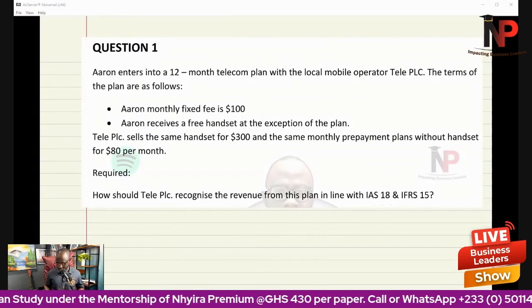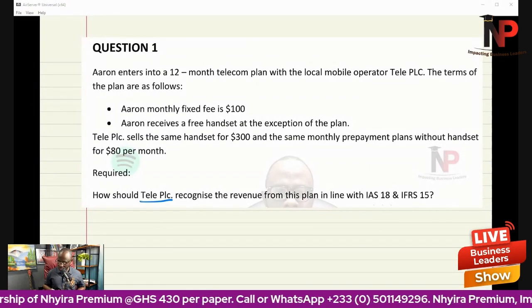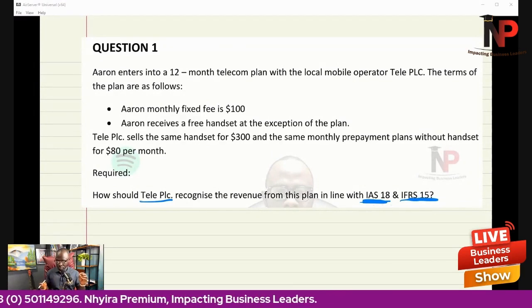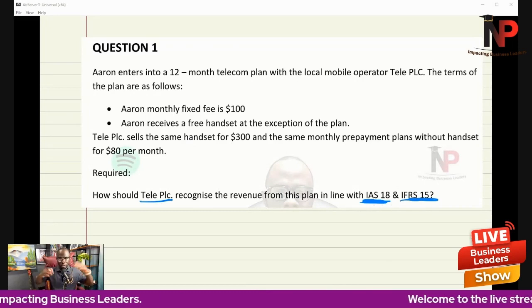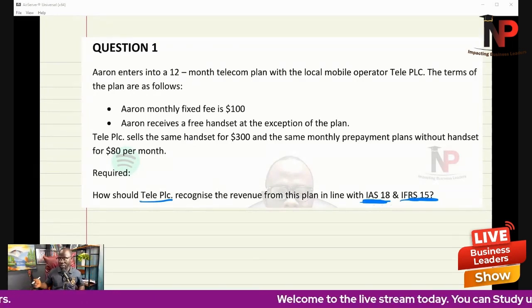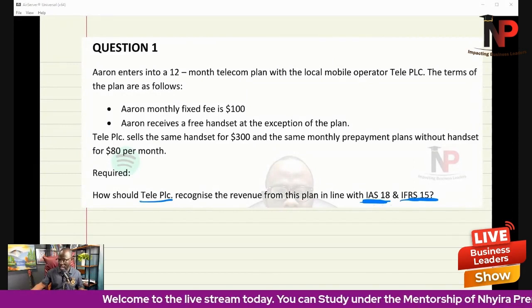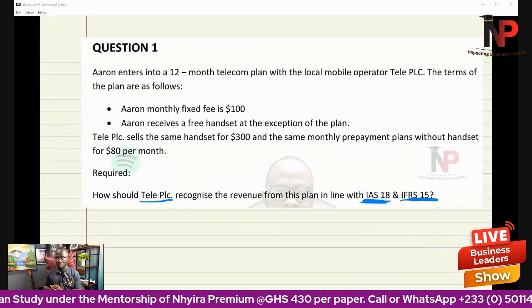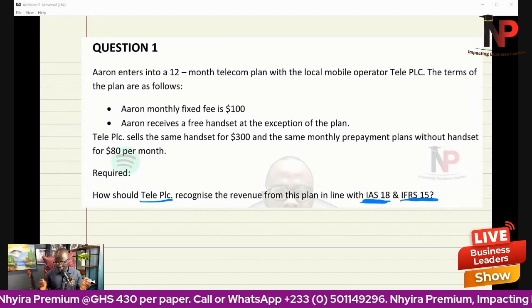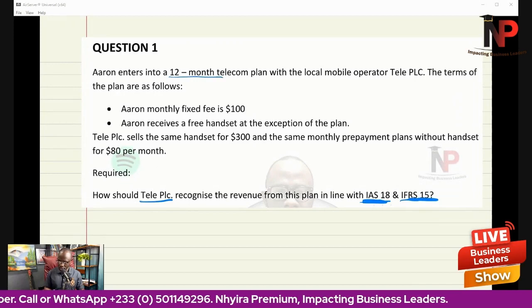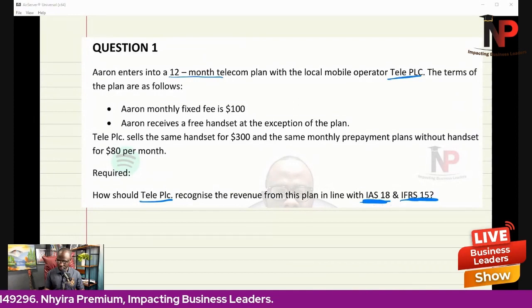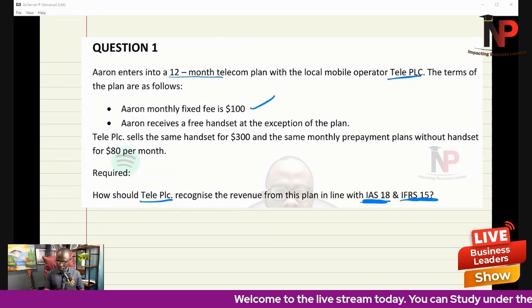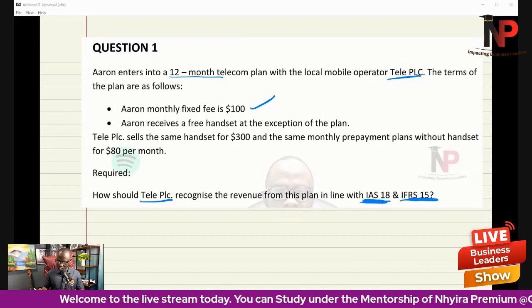Practical question: how should TelePLC recognize revenue in line with IAS 18 and IFRS 15? Aaron enters into a 12-month telecom plan with TelePLC. The monthly fee is $100, and Aaron receives a free handset at the inception of the plan.